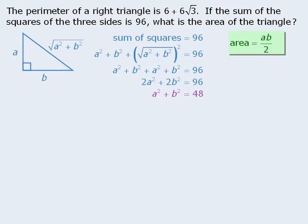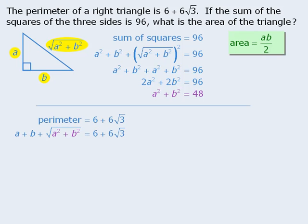Alright, now let's use our other piece of information that tells us the perimeter is equal to 6 plus 6 root 3. This means that if we take our 3 lengths and add them together, the sum will be 6 plus 6 root 3.